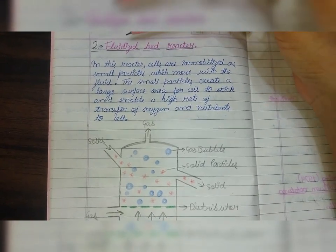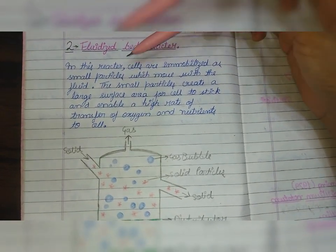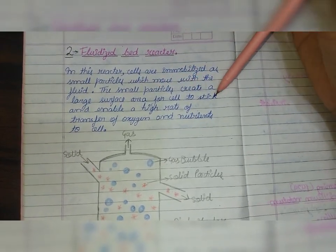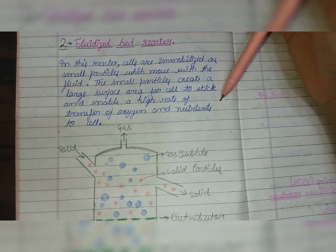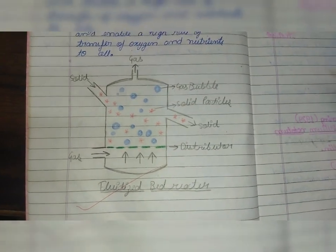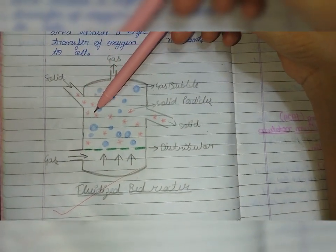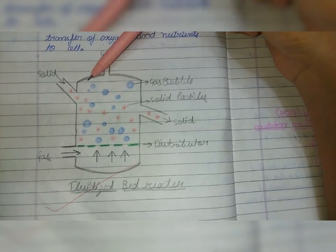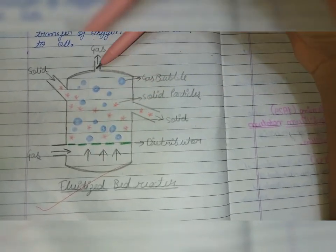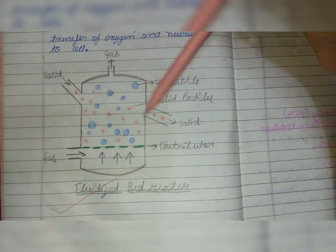Our second important reactor is the fluidized bed reactor. In this reactor, the cells are immobilized as small particles which move with the fluid. The small particles create a large surface area for the cells to stick and enable a high rate of transfer of oxygen and nutrients to the cell. As you can see in the diagram, solid particles are entered, gas bubbles are present and immobilized, and there is a distributor which distributes the gas. The collection is done from the top. This is your fluidized bed reactor diagram.